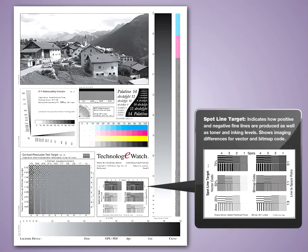Spot line target. Indicates how positive and negative fine lines are produced as well as toner and inking levels. Shows imaging differences for vector and bitmap code.